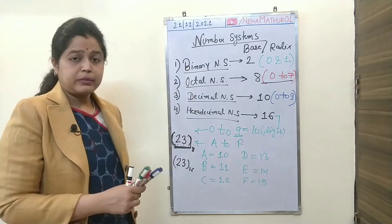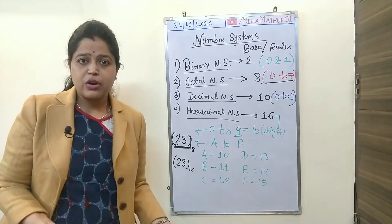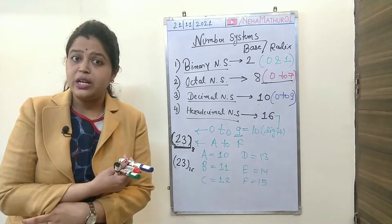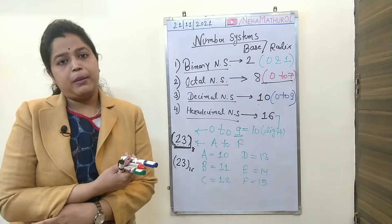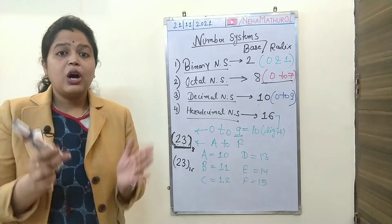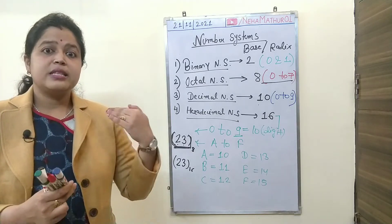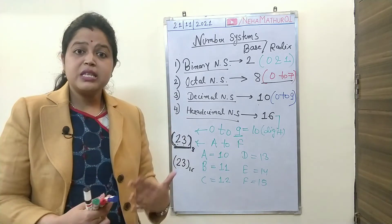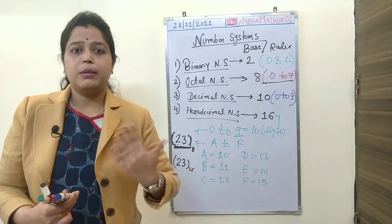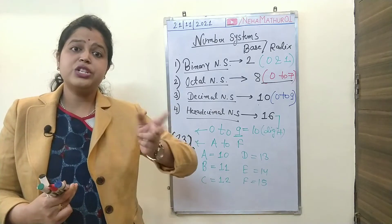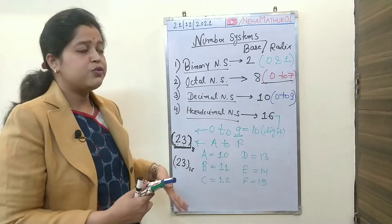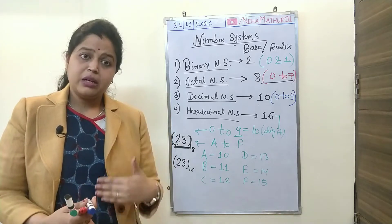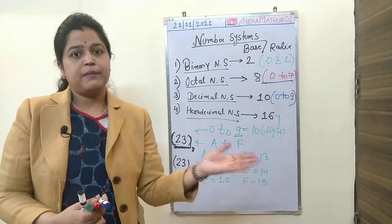The next important thing is that you must have knowledge about the conversion of each individual number system among the others. For example, you must have an idea of how you can convert information that is already in binary form into octal, decimal, or hexadecimal. Similarly, you must be able to convert from any of these number systems to the remaining three.